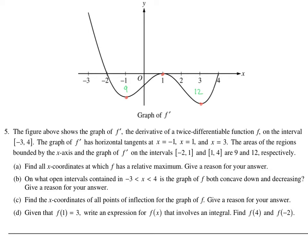That's a bit weird, but they're just saying 'respectively,' meaning in the same order as listed. All right, question A: find all x-coordinates at which f has a relative max. We only care about maximums, and we want the x-value — not the coordinate of the max — and give reasons. Let's find it first, then explain. A relative max — what we're looking for is f prime of x equaling 0, or does not exist. That's where you have a critical number.